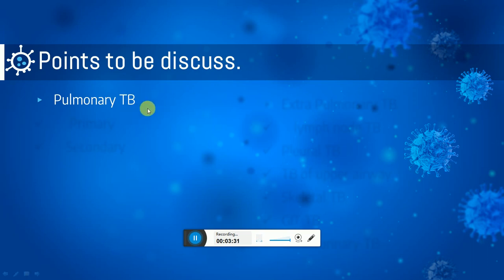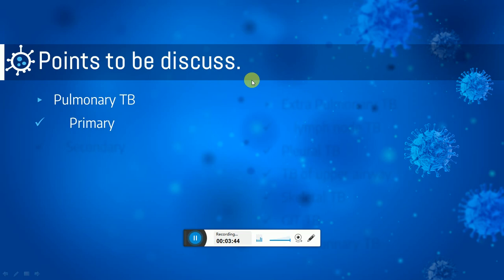Tuberculosis is classified on the basis of the site of infection. Usually, pulmonary tuberculosis is the most common type — about 90% of tuberculosis cases worldwide are pulmonary, meaning respiratory-related tuberculosis. The types are pulmonary tuberculosis, which has two subtypes: primary pulmonary tuberculosis and secondary tuberculosis.